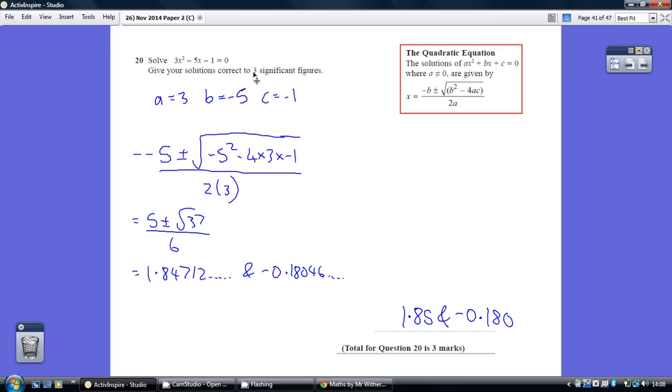And finally you just need to be careful with the three significant figures. Because in this situation with these particular numbers it's two different decimal places. This rounds to 1, 2, 3. So 1.85. But over here we only start counting at the 1 because this 0 doesn't count. So 1, 2, 3. So mine is 0.180. Whereas the first one is 1.85.